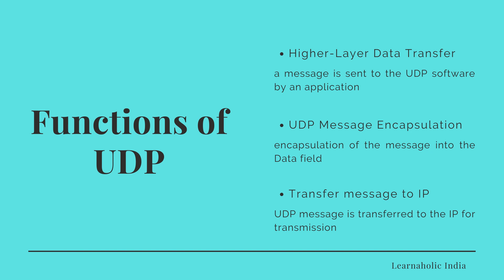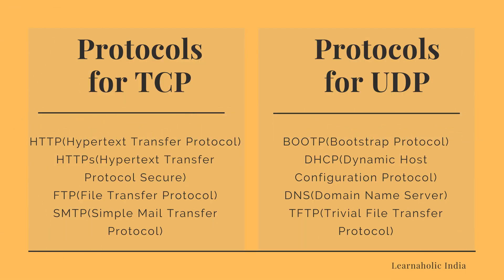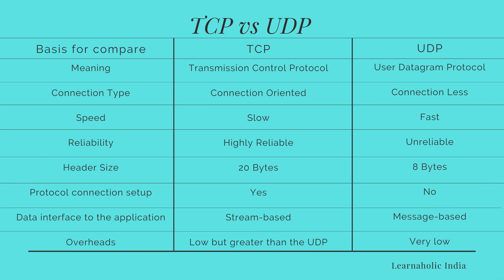Similarly, when the destination end receives the message, this whole process gets reversed. Now we will see the protocols that use TCP for transmitting data: HTTP (Hypertext Transfer Protocol), HTTPS (Hypertext Transfer Protocol Secure), FTP (File Transfer Protocol), and SMTP (Simple Mail Transfer Protocol). Protocols that use UDP for transmitting data are BootP (Bootstrap Protocol), DHCP (Dynamic Host Configuration Protocol), DNS (Domain Name Server), and TFTP (Trivial File Transfer Protocol). Now we will see the comparison between TCP and UDP.